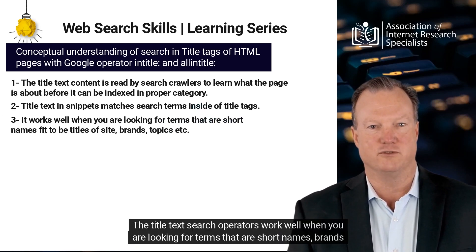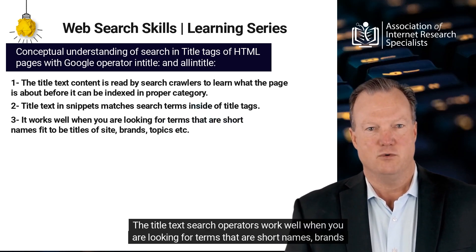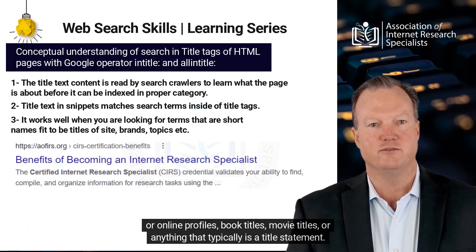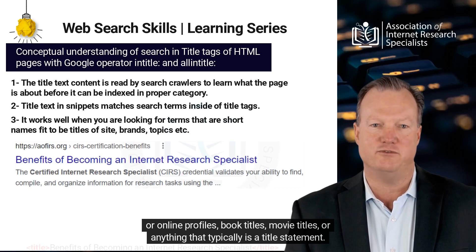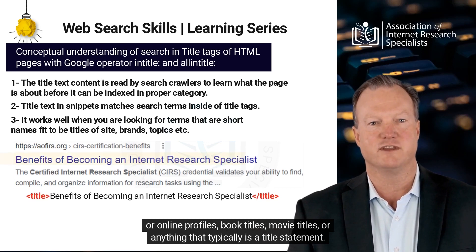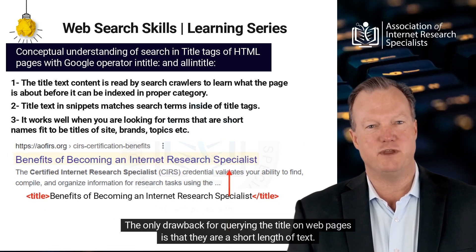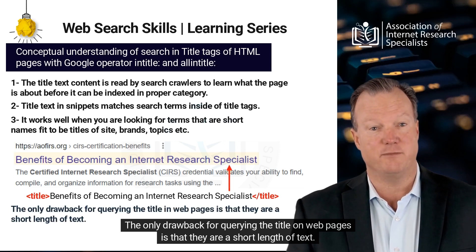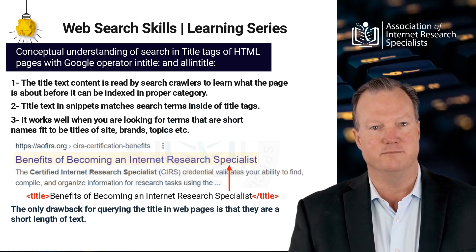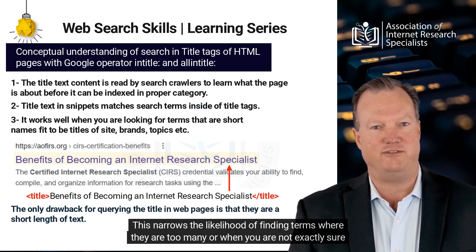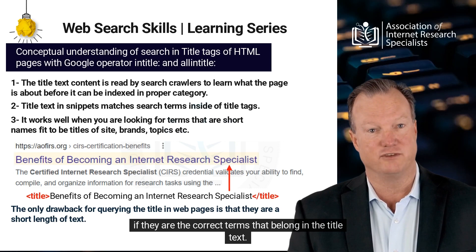The title text search operators work well when you are looking for terms that are short names, brands or online profiles, book titles, movie titles, or anything that typically is a title statement. The only drawback for querying the title on web pages is that they are a short length of text. This narrows the likelihood of finding terms where there are too many, or when you are not exactly sure if they are the correct terms that belong in the title text.